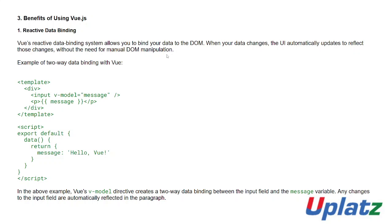This is a very reactive example of two-way data binding with Vue. Please note that you cannot understand these codes right now, but later you must understand them. Within the template tag there is a div tag, and an input with v-model bound to message. Then a p tag displaying message. Now export default with a data function that returns an object: message colon 'Hello Vue'.